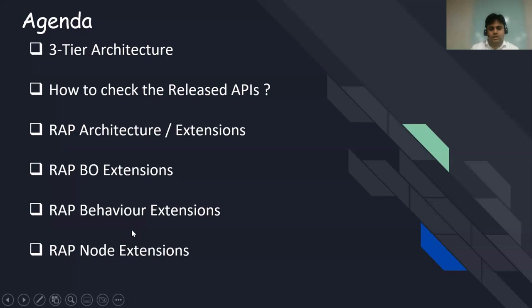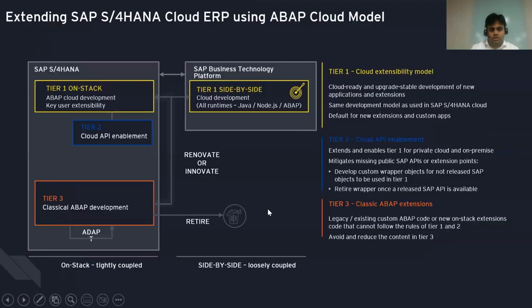You could also see a sales order scenario where I have extended a behavior extension and see some action on the list report. You can also see the different ways of extending node extensions — say, for example, adding an additional facet in the object page. Before starting with RAP extensions, you need to know on a high level what are the different extension possibilities that ABAP Cloud can offer you.